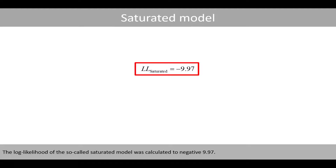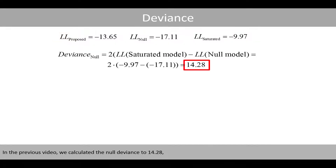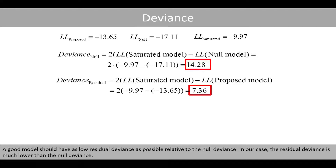The log likelihood of the so-called saturated model was calculated to negative 9.97. Once we had worked out the log likelihoods for all three models, we could calculate the deviance. In the previous video, we calculated the null deviance to 14.28 and the residual deviance to 7.36. A good model should have as low a residual deviance as possible relative to the null deviance. In our case, the residual deviance is much lower than the null deviance.